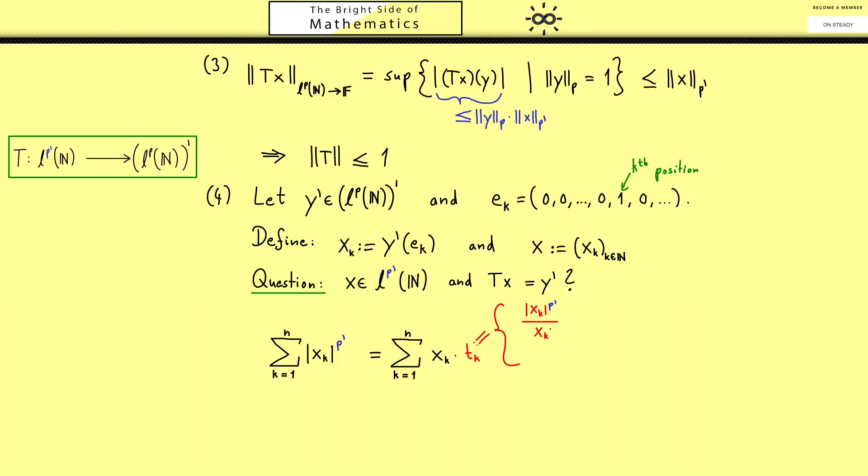Therefore the definition is very simple. We just have the power and divide by xk. But then this definition can only hold if xk is non-zero. But in the case that xk is zero we can just put tk to zero. Of course this is just a simple trick but it will help us simplifying the whole term. So we have tk times xk but we can also write y prime ek. And at this point we can use the linearity of y prime and pull in the scalars and the whole sum.